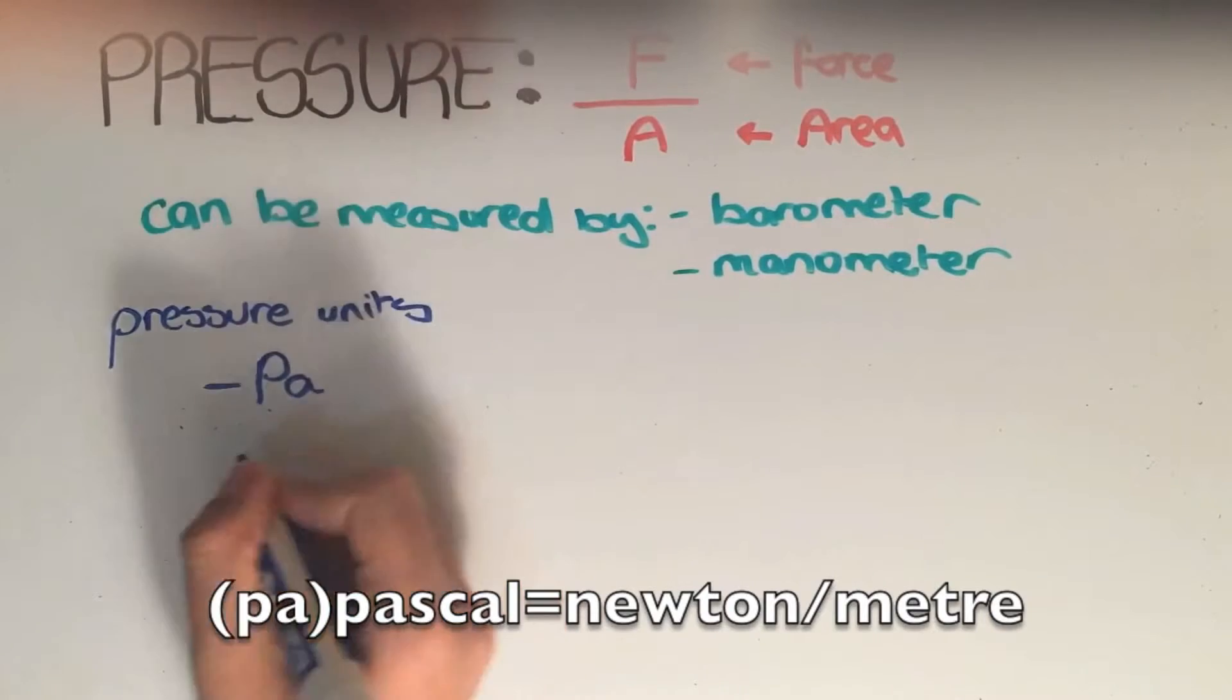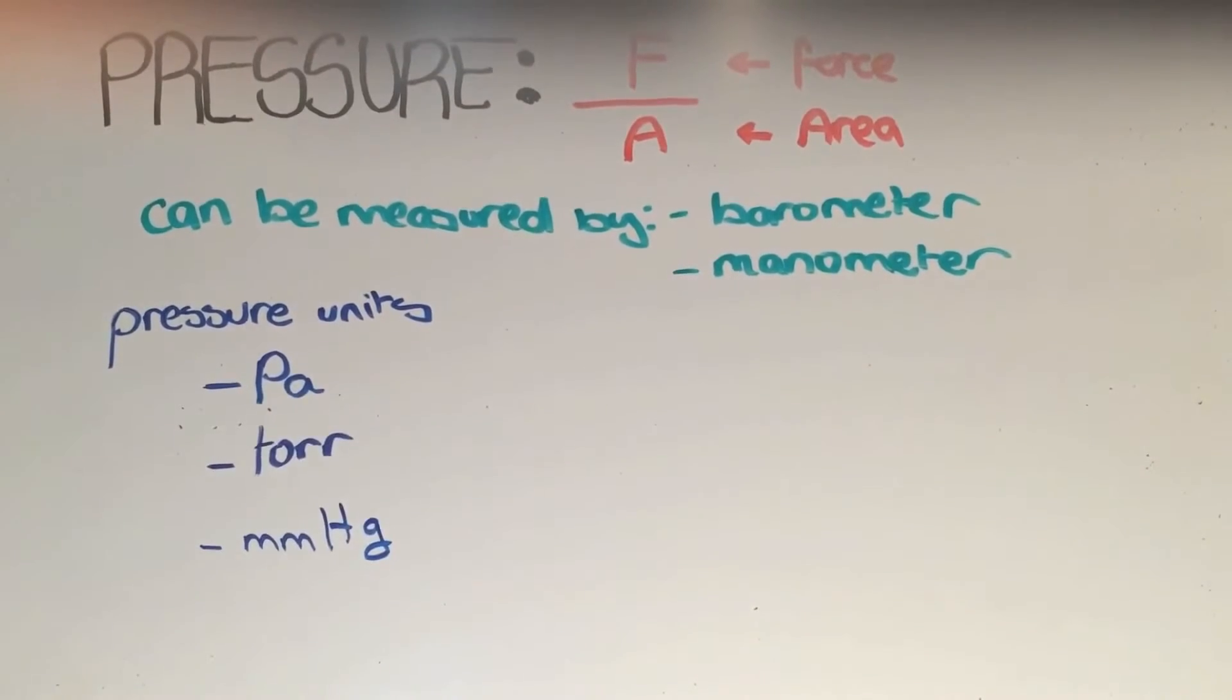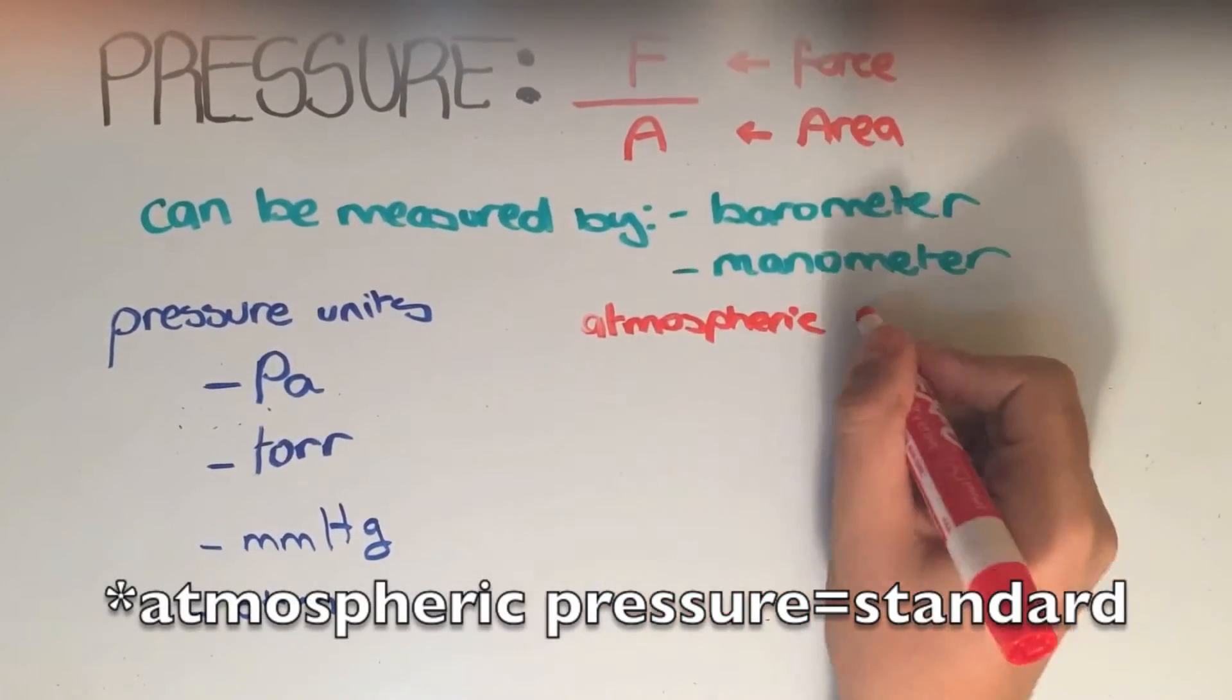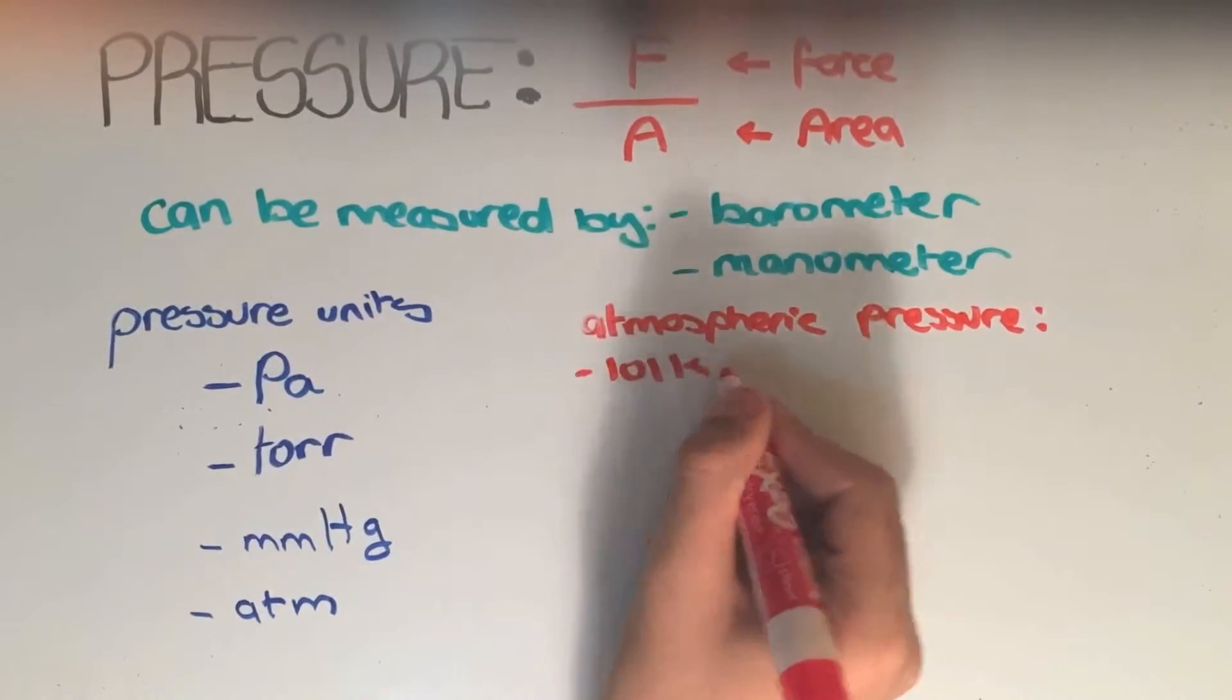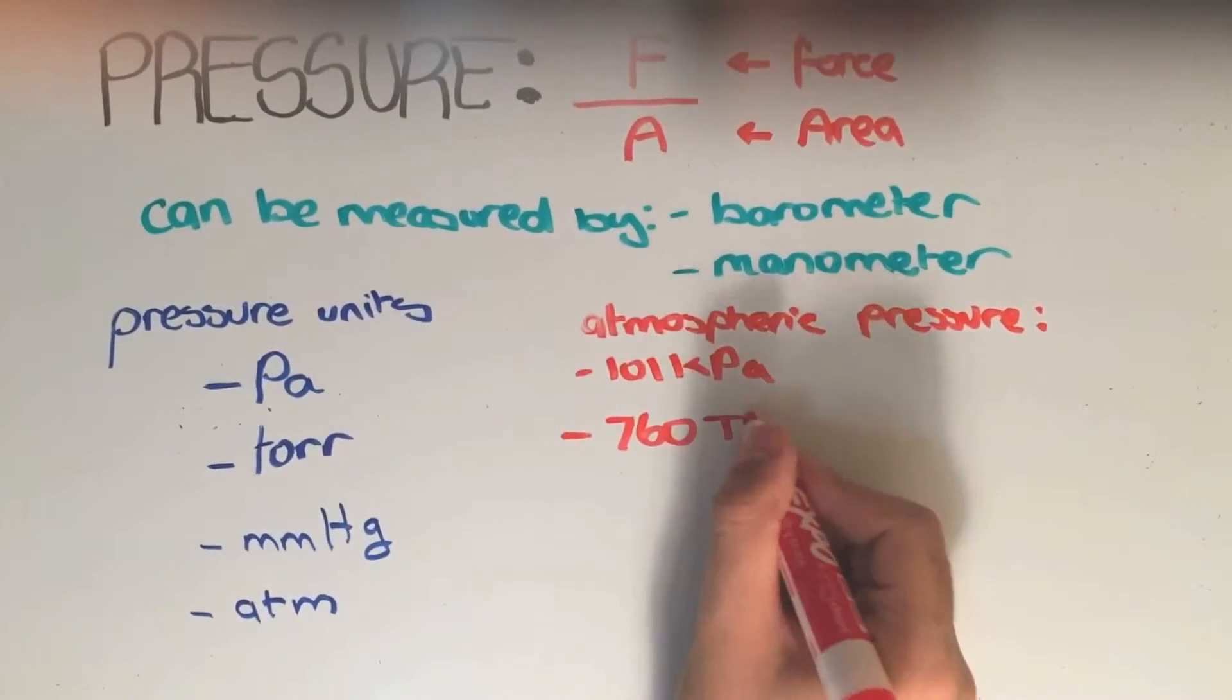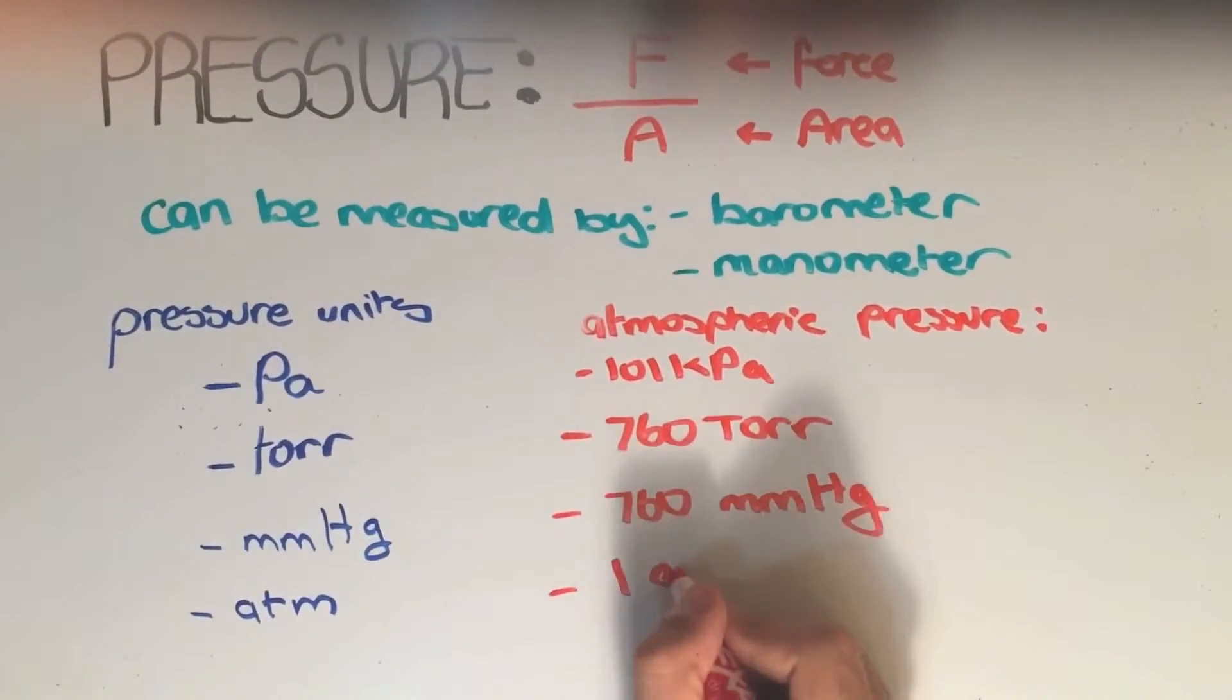The pascal is equal to 1 newton per meter. Other important units for pressure are torr, millimeters mercury, and atmospheres. Atmospheric pressure or standard pressure is the pressure the air exerts on the surface of the earth. This is equal to 101 kilopascals, 760 torr, 760 millimeters mercury, or 1 atmosphere.